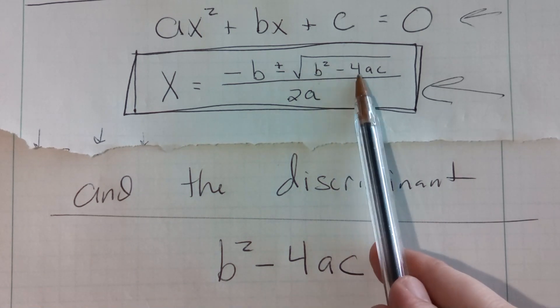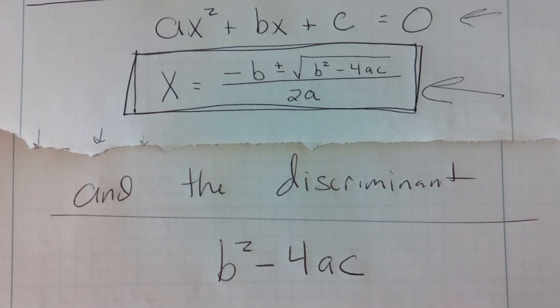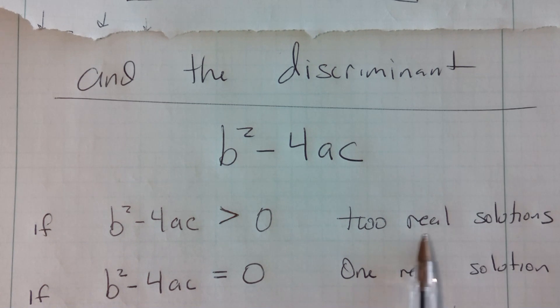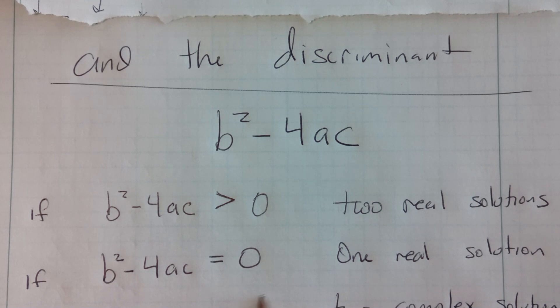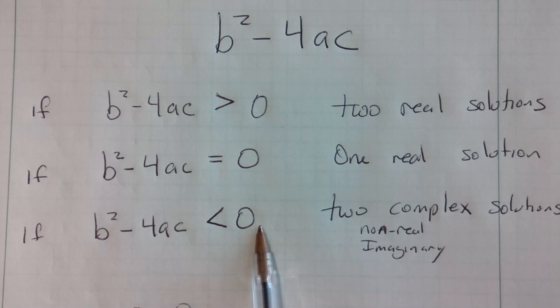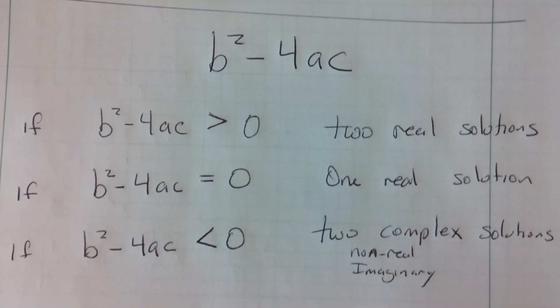b-squared minus 4ac, if it is a positive number or greater than zero, we will end up having two real solutions. If that b-squared minus 4ac is equal to zero, then we have one real solution. And if b-squared minus 4ac is less than zero, then we have two complex solutions or non-real solutions or imaginary solutions. Think of why that would be.